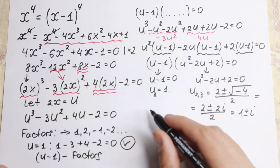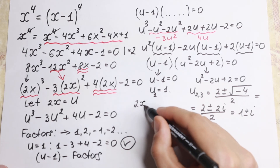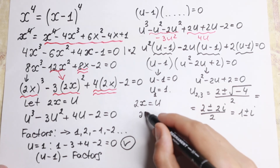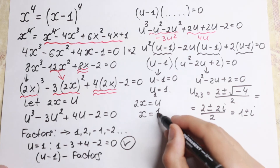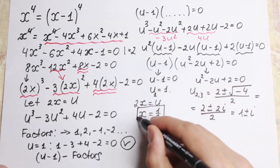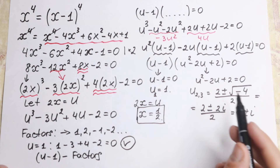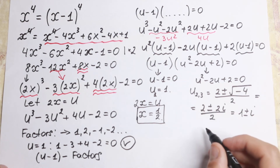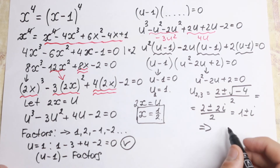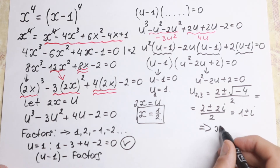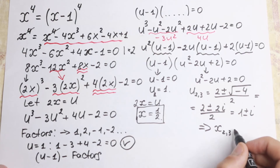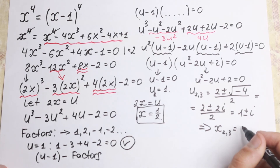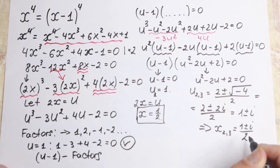Going back to our substitution, 2x equals u, so x equals u over 2. From u equal to 1, we get x equal to 1 half — our first real root. From the complex values of u, x second and third equal (1 plus or minus i) over 2.